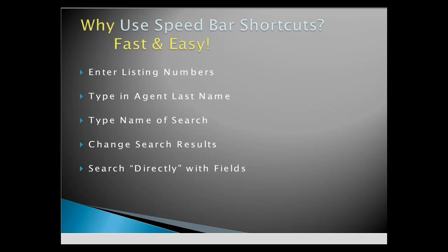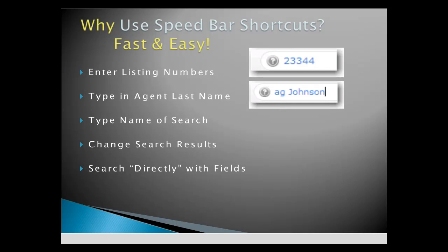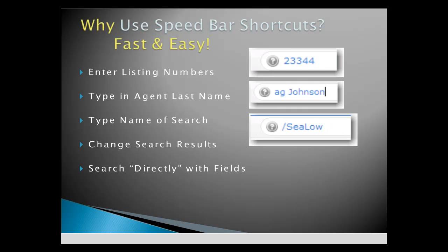Imagine a client gives you a listing number — enter it directly into the Speed Bar on the homepage. Search for another agent by typing their last name preceded with AG for agent. Type a previously saved Speed Bar shortcut and view your listings in less than half a second.